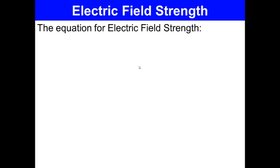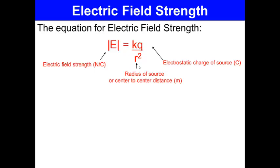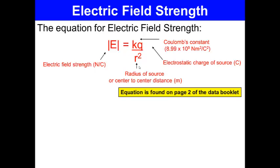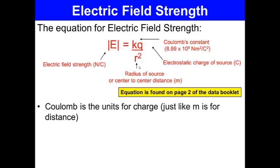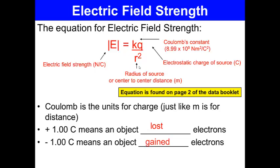Electrical field strength. There's an equation for determining electric field strength. And that is E is equal to kq over r squared. Where E is the electric field strength in newtons per coulomb. R again is the radius of the source, or center to center distance. And q is electrostatic charge of the source, measured in coulombs. K is coulombs constant, 8.99 times 10 to the 9th newton meter squared coulombs squared. The equation is found on page 2 of your data book. A coulomb is the unit of charge, just like meter is the unit of distance.